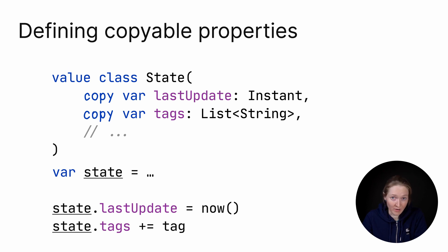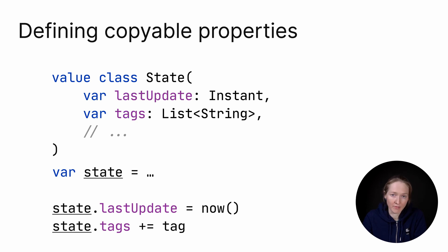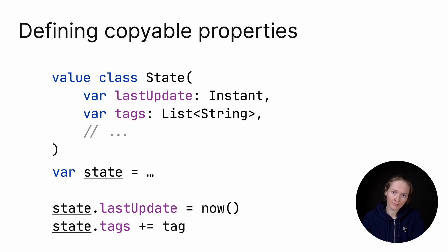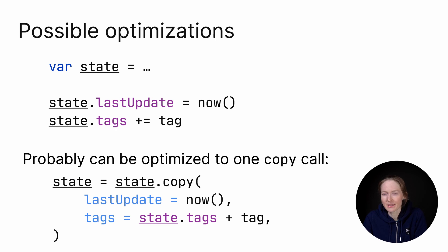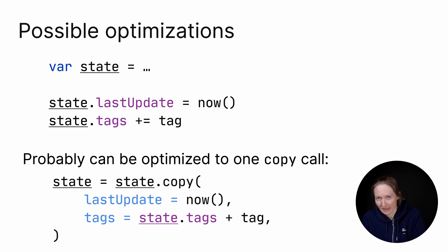You can define a regular mutable var without a backing field in the class body, but as a constructor argument, var can only be copyable. Thus, you can omit the copy modifier and simply define var – it becomes copyable automatically in this context. For properties inside the class body, you should specify the copy modifier explicitly. You could wonder what happens if you update several properties one by one – whether there'll be one copy call under the hood or several. Most probably, this case might be optimized to one underlying copy call, at least in simple cases.